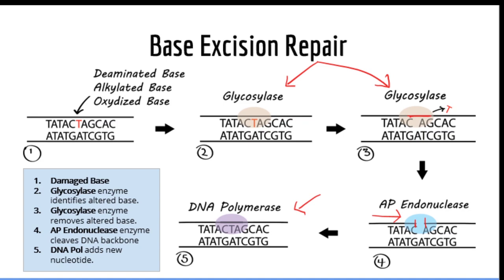What you need to know about base excision repair is that it is responsible for fixing non-bulky, non-helix-disturbing lesions such as those found when a nitrogenous base is chemically modified. Additionally, BER repairs another type of lesion: occasionally a thymine in DNA is converted to a uracil. Since uracil is only found in RNA, BER will identify the uracil in DNA, remove it, and replace it with thymine. In summary, whenever a nitrogenous base has been chemically modified — such as by addition or loss of an atom — it is typically repaired by base excision repair.